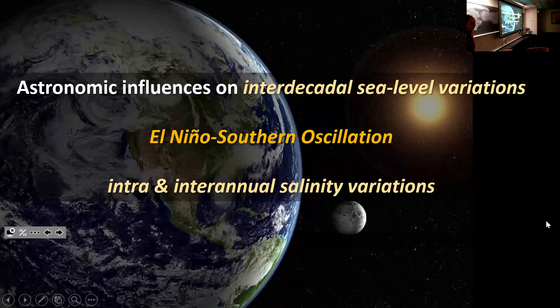So in summary, I've talked about, I come back to the main message, which is we should think about astronomic influences on any variable that we studied because we can be detected on the interdecadal variations of sea levels. We can also detect it on El Niño-Southern Oscillation and we can detect it on variations of salinity, saltwater intrusion into an estuary. So again, let's keep thinking about the sun and the moon.